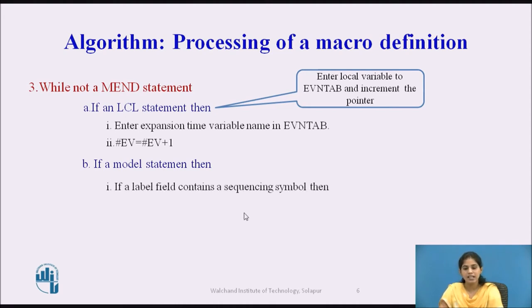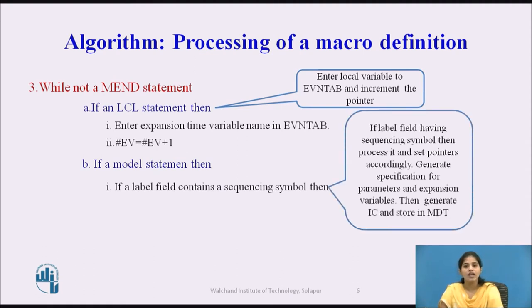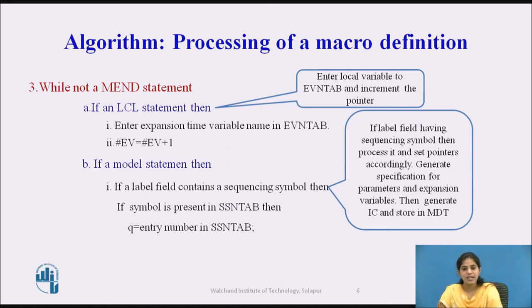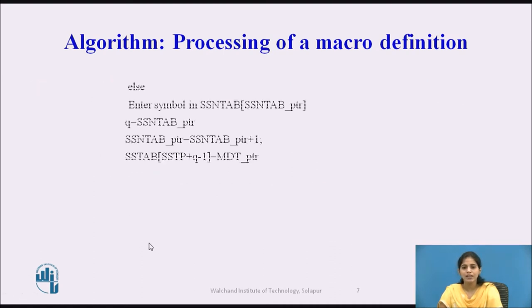Next, we check if there is a model statement. If the label field contains a sequencing symbol, we check whether that symbol is present in the SSN tab. If present, we fetch that symbol's entry number from the SSN table and assign it to variable Q. If not present, we enter the symbol in the SSN tab, take the entry number and assign it to Q, then increment the SSN tab pointer: SSN tab pointer = SSN tab pointer + 1. We then assign the micro definition table pointer to the sequencing symbol table using: sequencing symbol table pointer + Q - 1.